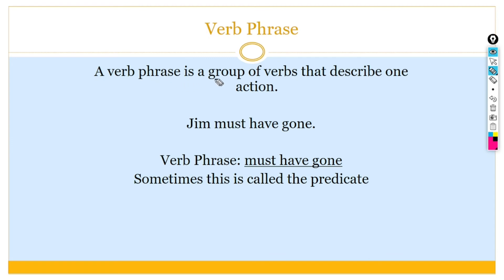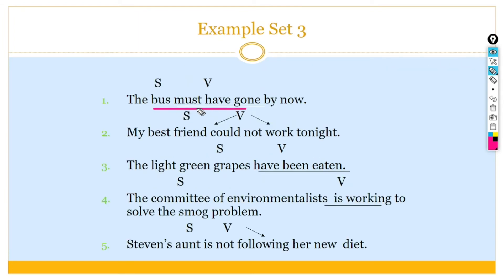A verb phrase is a group of verbs that describes action. Jim must have gone. So, must have gone is action, one phrase, must have gone. Sometimes it's called the predicate. So, it is called the predicate. Must have gone. Now, the boss is a subject and other is the verb. My best friend, subject, could not work tonight. It is the verb.